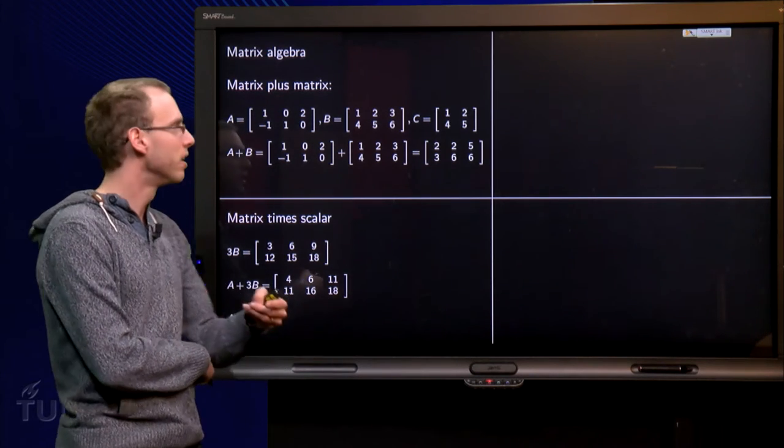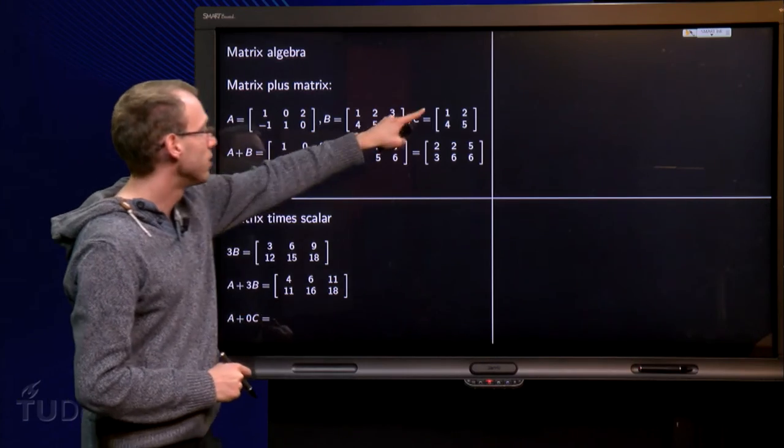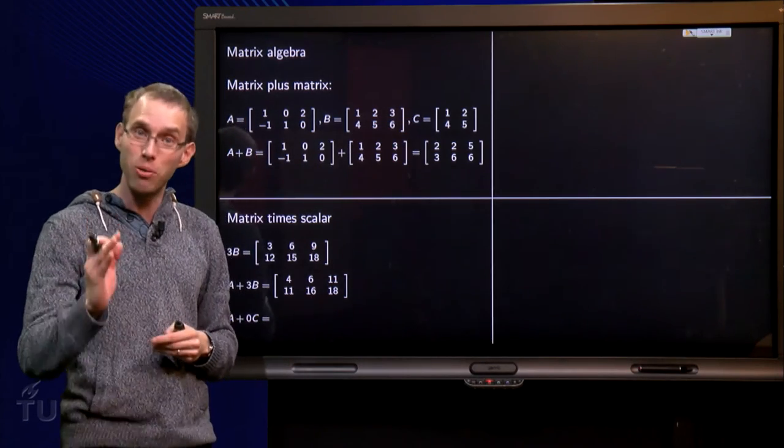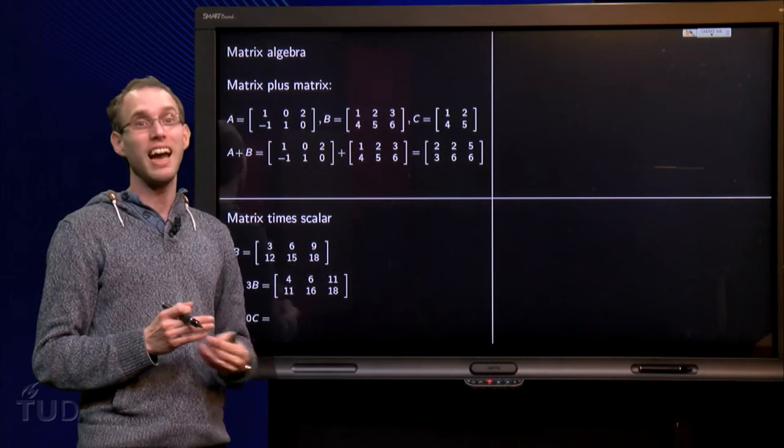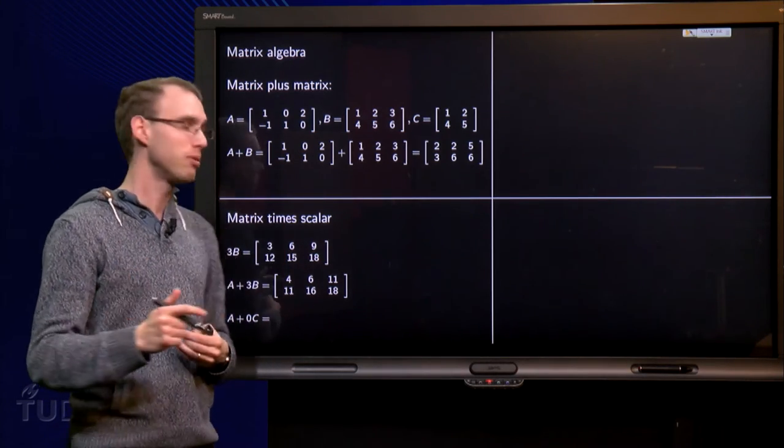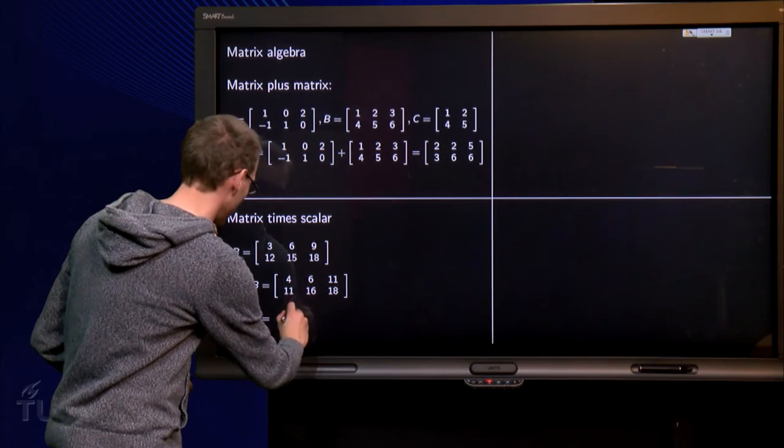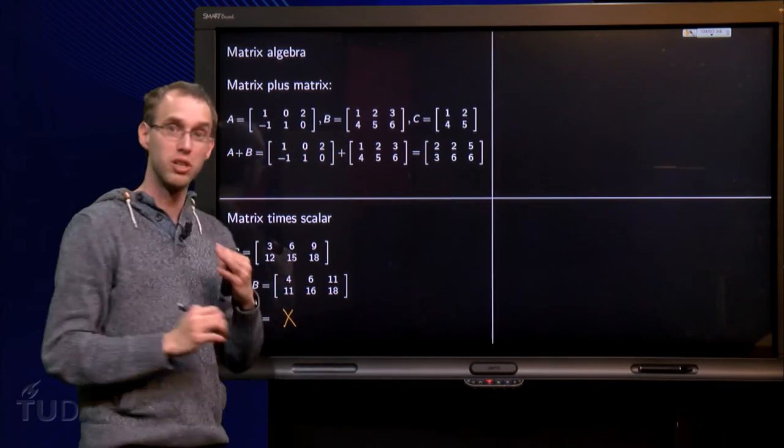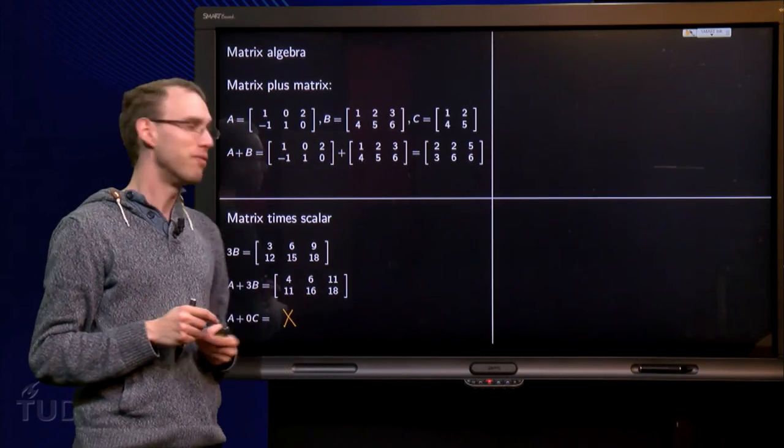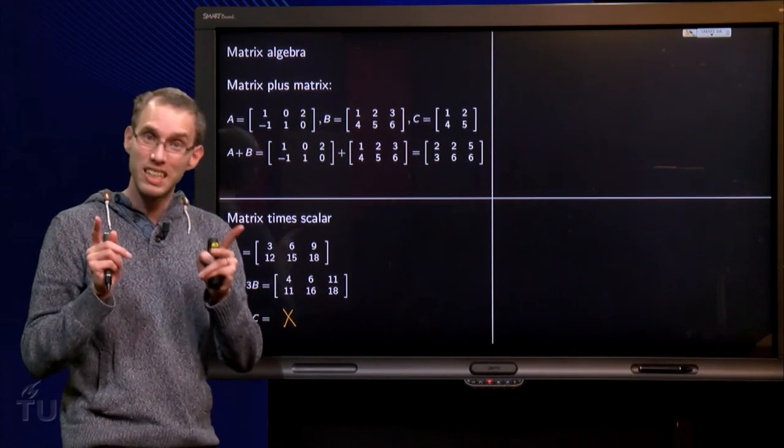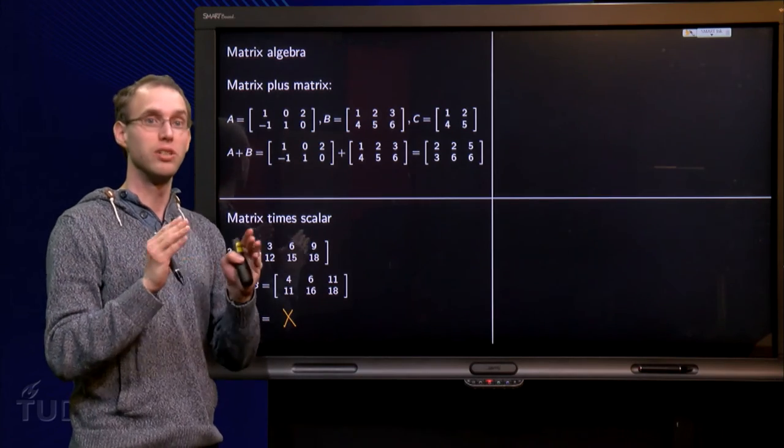Wrong. 0 times C is a 2 by 2 matrix containing only zeros. A is a 2 by 3 matrix. You cannot add a 2 by 3 matrix and a 2 by 2 matrix, so this is impossible. It's not defined. So in fact, be careful with the sizes of the matrices. Those have to match.